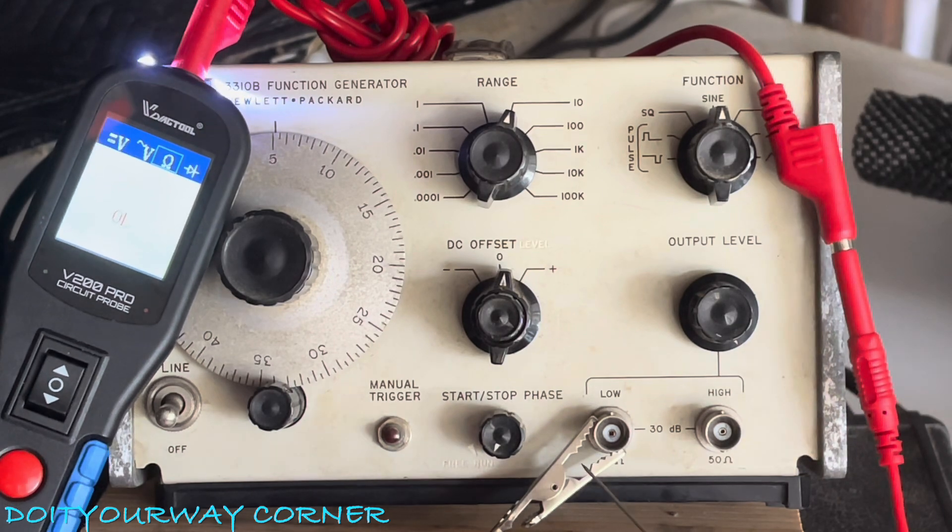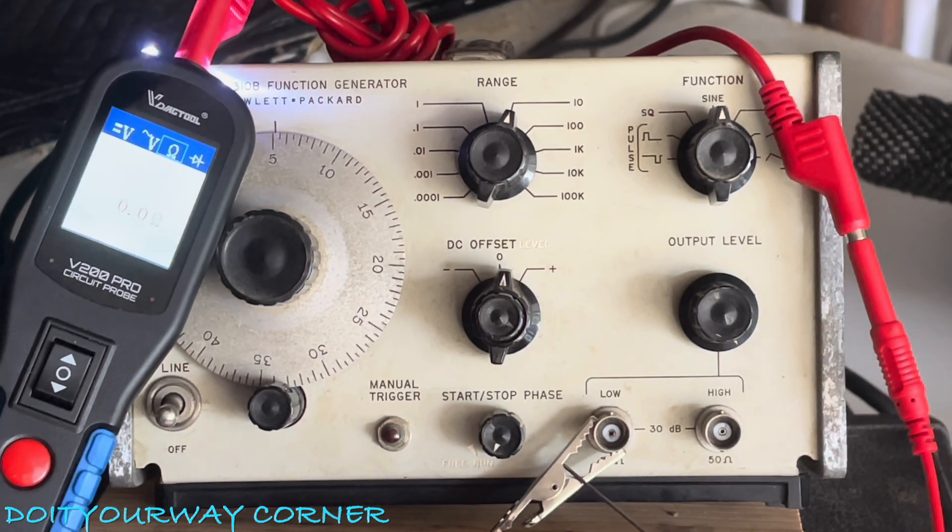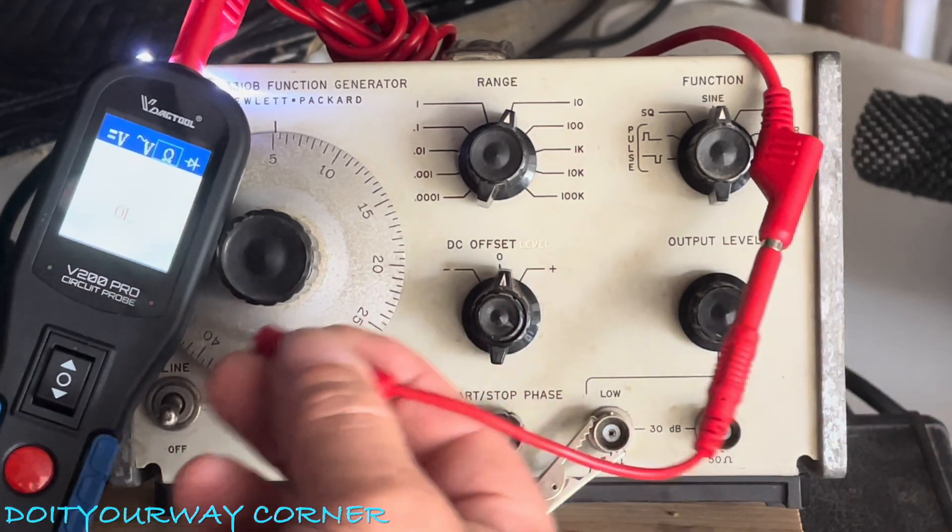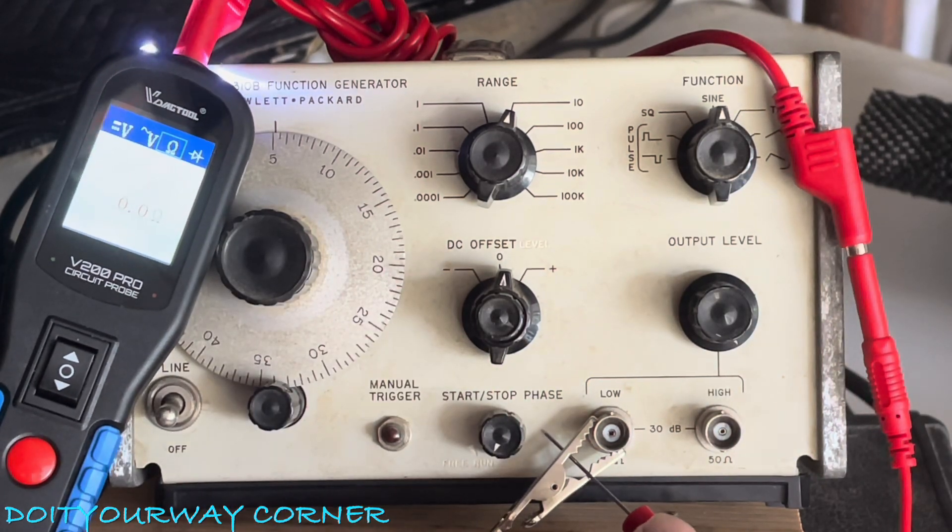But if I go and I make continuity, you're going to get an audible alarm. But again, no visual feedback. So no LEDs are going to light up, no color display in the screen. So that's my resistance check.